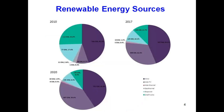Now let's look at the comparison of renewable energy sources over time. As technology advances, the utilization of these sources changes. This slide shows pie charts for 2010, 2017, and 2020. Dark purple stands for wind, light purple for solar PV, pinkish-purple for solar thermal and geothermal, light green for biomass, and dark green for small hydro.